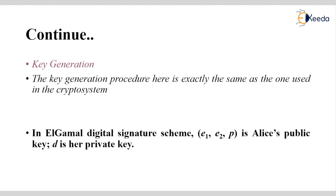The public key consists of e1, e2, and p, while the private key is only d.